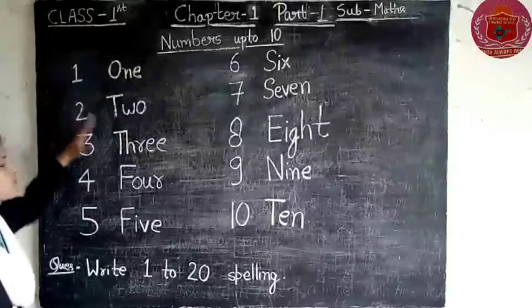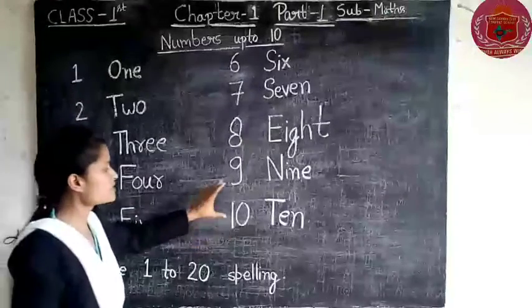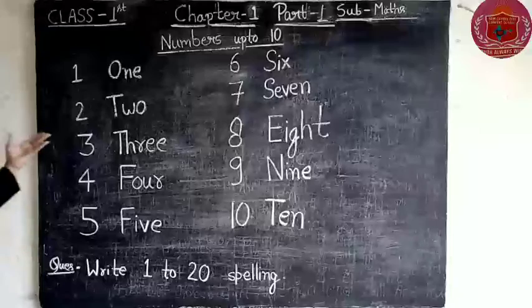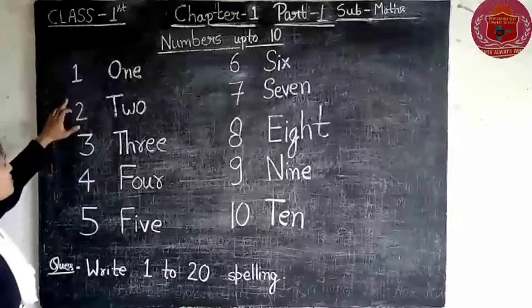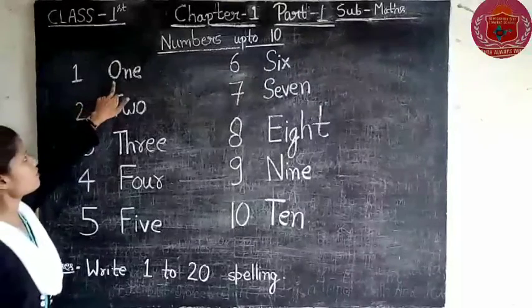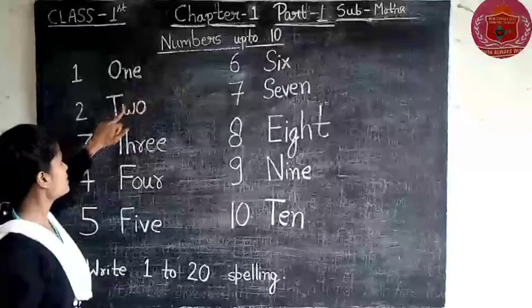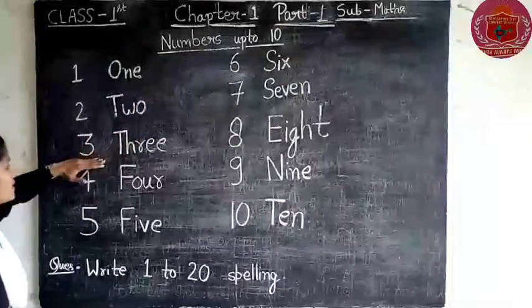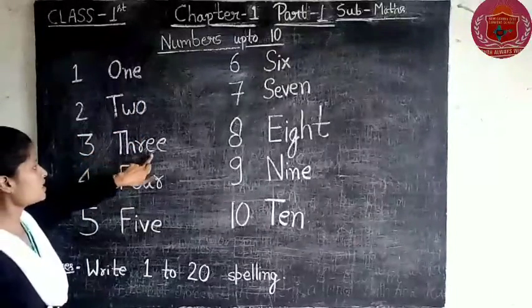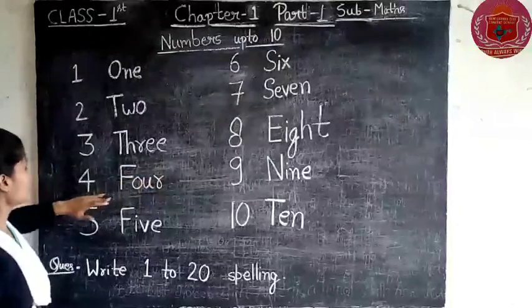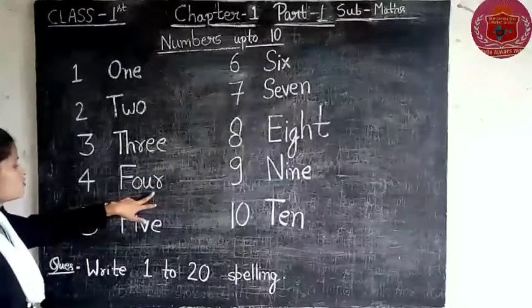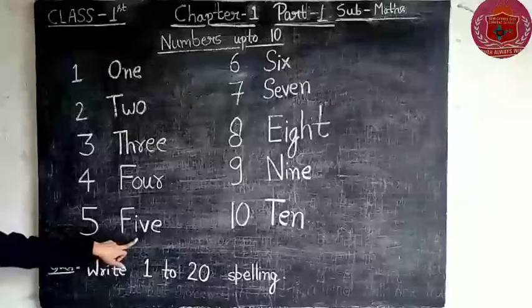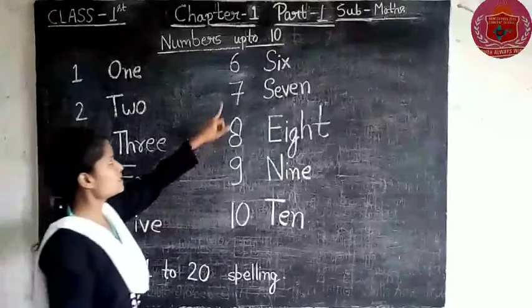We learned about numbers 1 to 10 written in spelling form. So let us repeat: 1 is O-N-E, 2 is T-W-O, 3 is T-H-R-E-E, 4 is F-O-U-R, 5 is F-I-V-E.